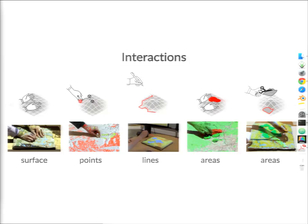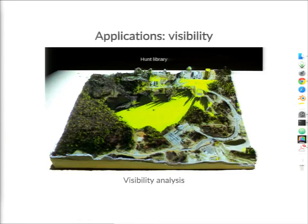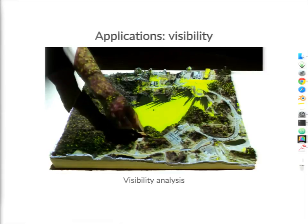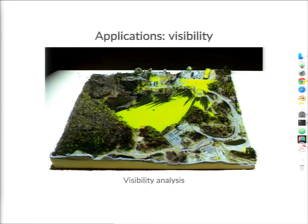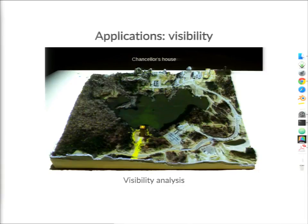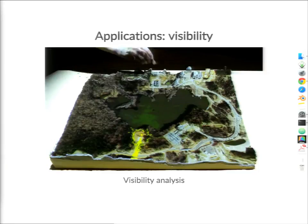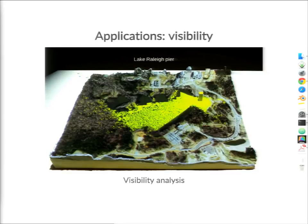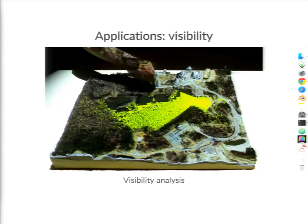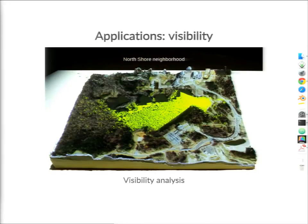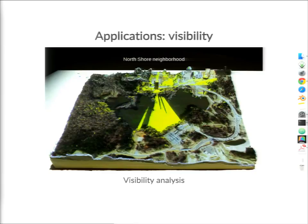Here we use markers to explore visibility. This is NC State campus, and the model represents a digital surface model including trees and buildings. By placing a marker, we identify the place, dynamically compute the viewshed, and display it on the model as the yellow area — an easy way to explore visibility patterns.